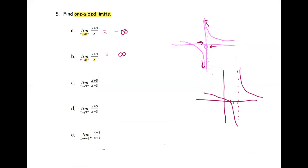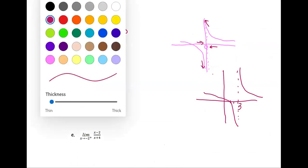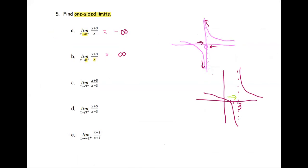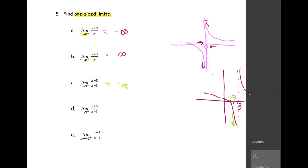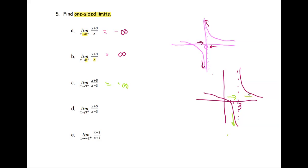At the value 3 here, as it approaches 3 from the left, the function is approaching negative infinity. As x approaches 3 from the right, the function graph is approaching positive infinity.